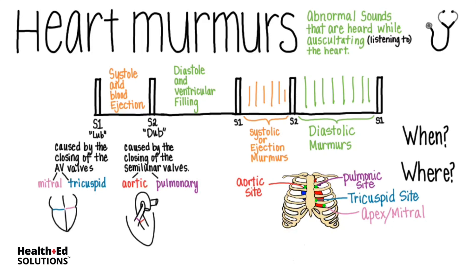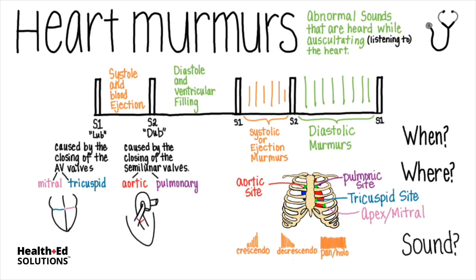The type of sound is critical for classifying heart murmurs. Crescendos and decrescendos get louder and then quieter throughout the murmur. Pan or hollow murmurs remain constant throughout — you can remember this because the root word pan means all. Clicks and snaps usually indicate that a stiff valve finally popped open as pressure built behind it.